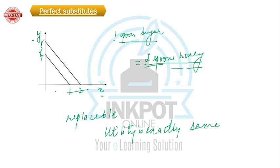One spoon of sugar equals two spoons of honey. So if I make an indifference curve for a perfect substitute, it can be like this or like this — it doesn't have to be at a 45-degree angle. It can have any particular angle depending on the ratio.